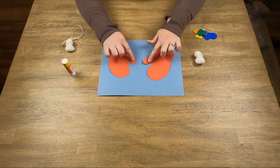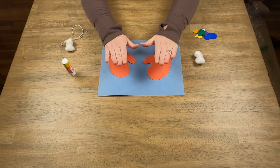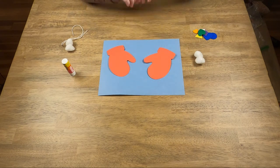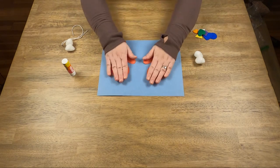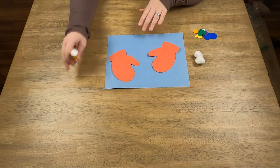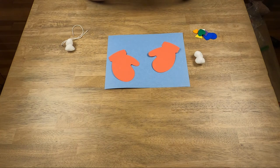With mittens, the thumbs face each other. So you want the thumbs to be facing in the same direction so that it looks like hands. Now we're gonna glue these down anywhere you want on your piece of paper.